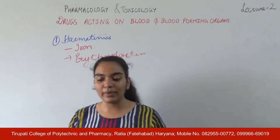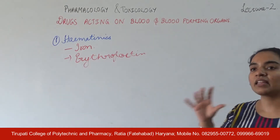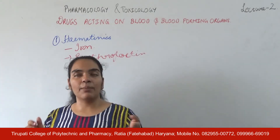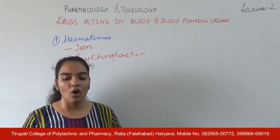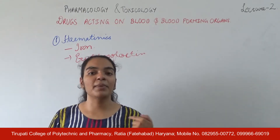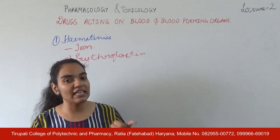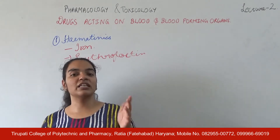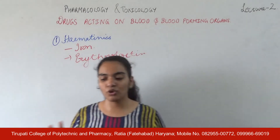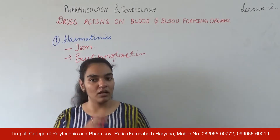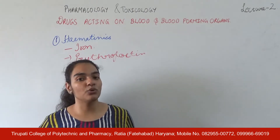If erythropoietin levels are elevated, it indicates that the kidneys are damaged or the patient has anemia. Using DNA recombinant technology, we synthesize erythropoietin. It is used for anemia, premature babies, and AIDS patients. Side effects include hypertension, and the dose is 25 to 100 international units given three times per week.